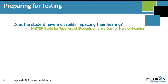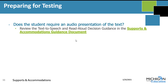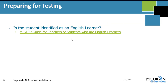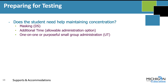Does the student have a disability impacting their hearing? We have a nice guide available for that topic as well. We also have guidelines and guidance on making decisions for text-to-speech and read aloud — that is not a standalone document, but that guidance lives in the supports and accommodations guidance document. Another standalone option to consider is whether the student is identified as an English learner. For students that may need help maintaining concentration, you should also consider masking options, which is a designated support.